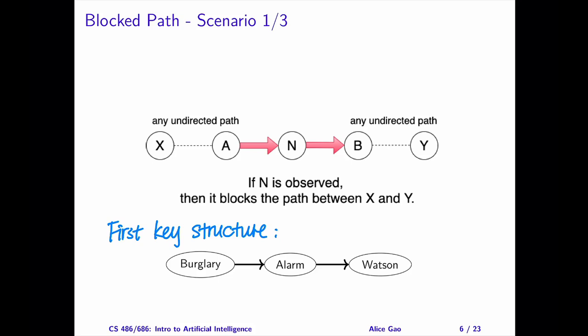This rule is similar to the first key structure, that's a chain. If we observe whether alarm is going off or not, then burglary and Watson become independent. You can think of observing alarm or observing N as cutting the chain at that node.